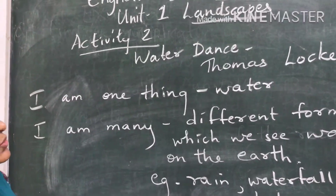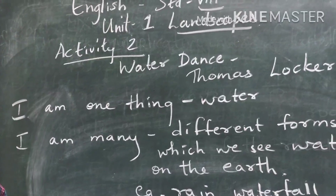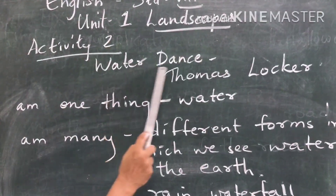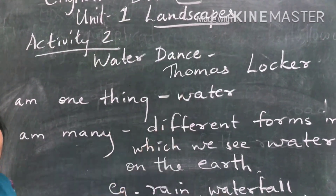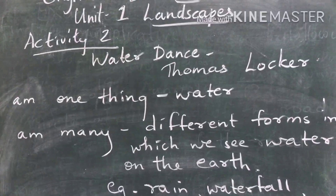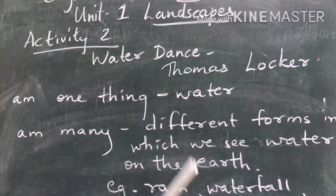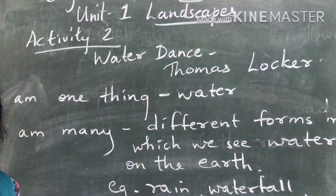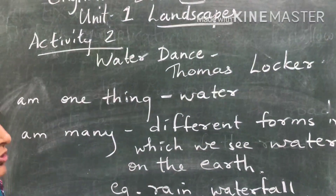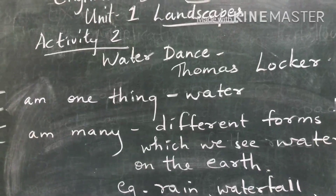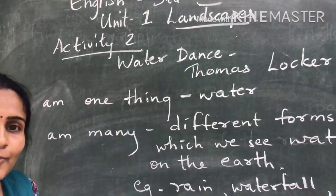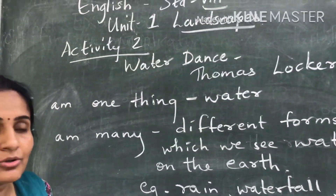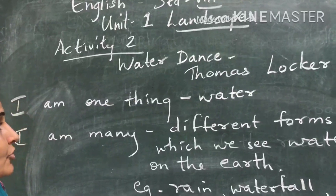Activity 2 in your lesson deals with a poem. The title of the poem is 'Water Dance' and the poet is Thomas Locke — the name of the poet is written at the end of the poem. Remember: Water Dance is the title of the poem, and Thomas Locke is the poet.